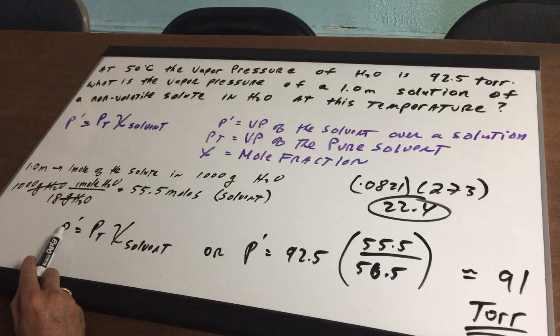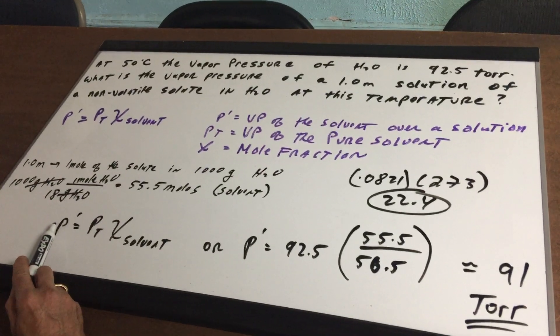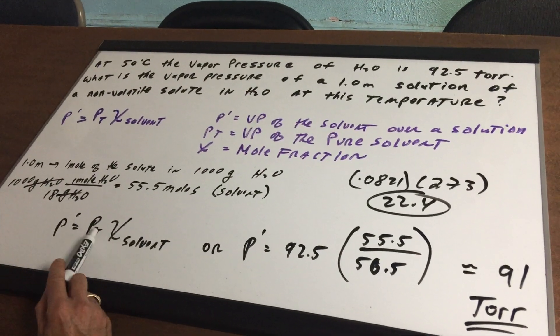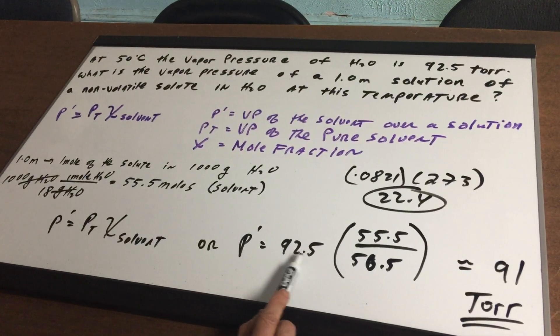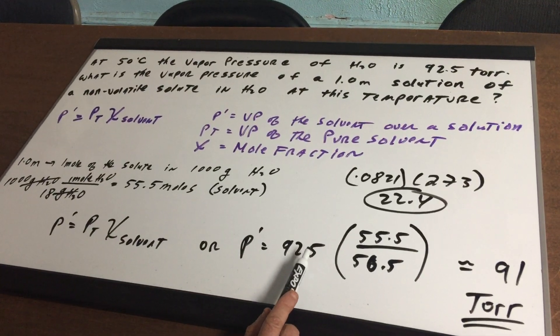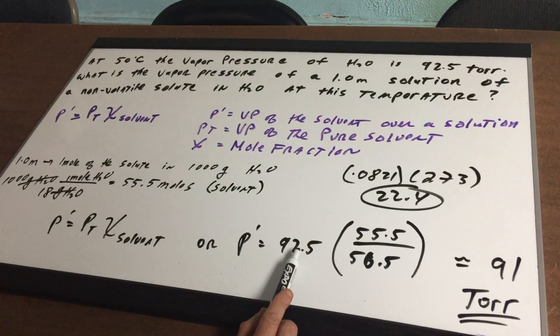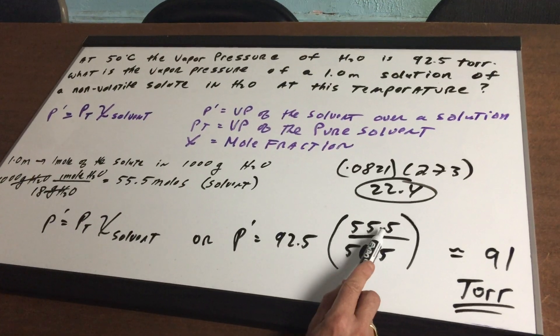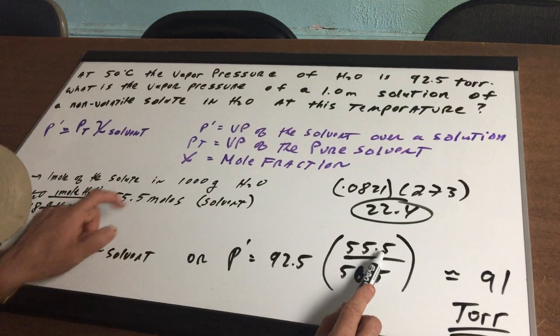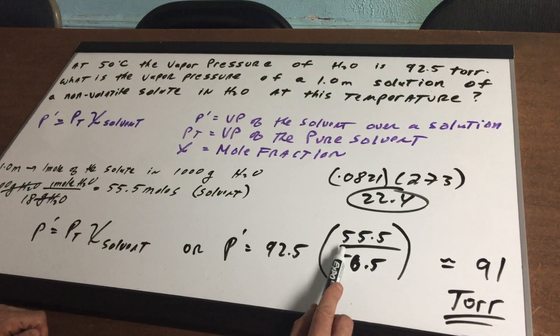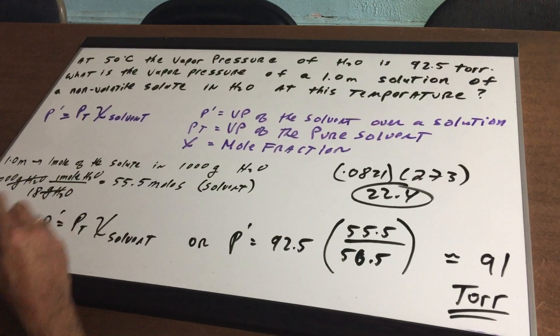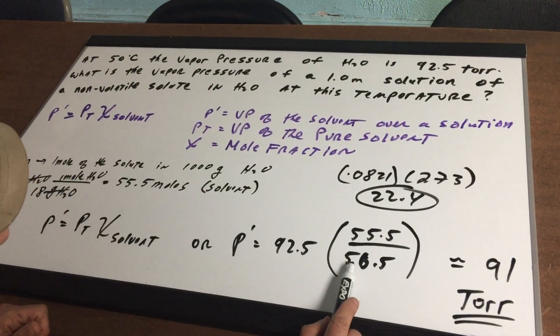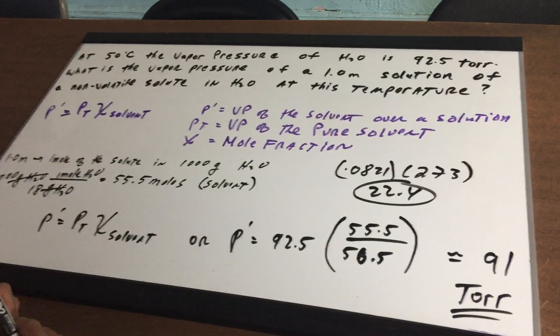Alright. Write the formula. p prime, that's the vapor pressure of the solvent over the solution, is pt times x of solvent. We know the pure water is 92.5. Now, the mole fraction would be the moles of the water, which is 55.5, divided by the total moles, which we have 55.5 moles, plus we add one mole of the solute would give me 56.5.